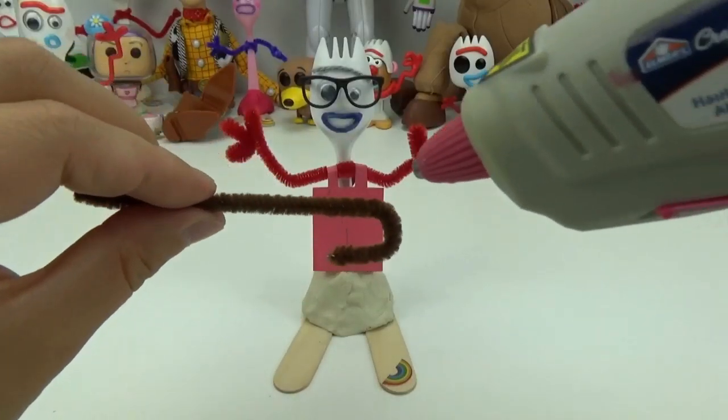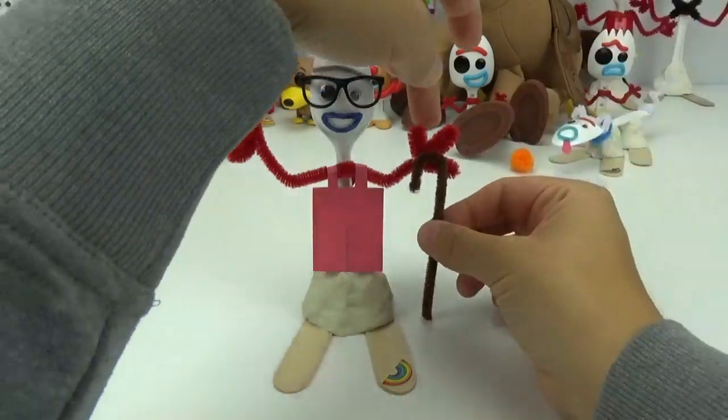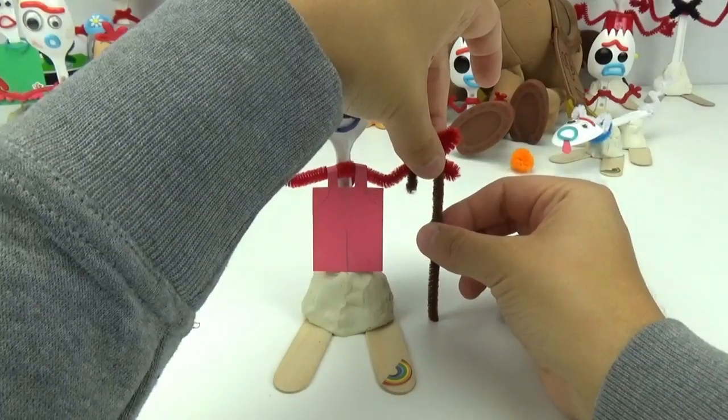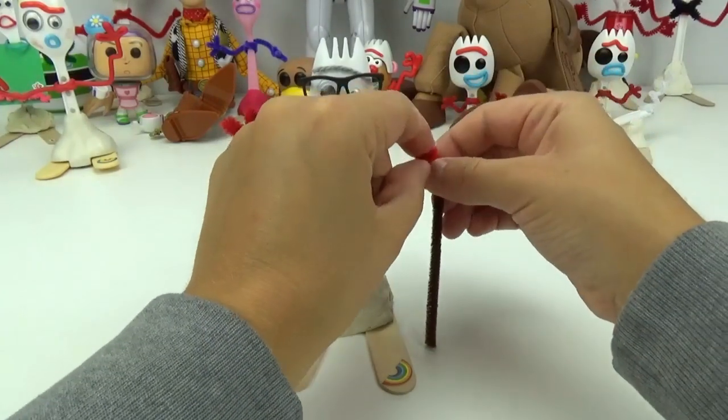I am going to add some glue to the back here so that it sticks to his hand. I am going to fold over his fingers so it looks like he is holding the cane.